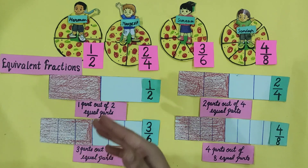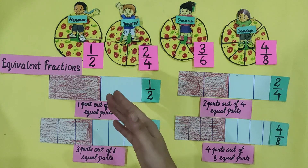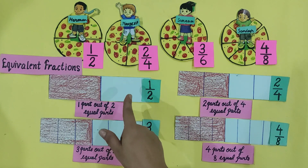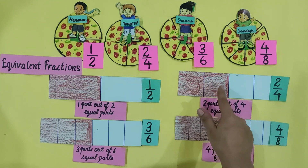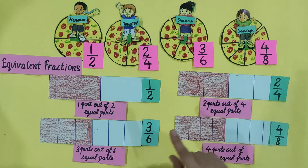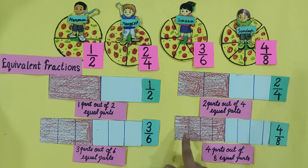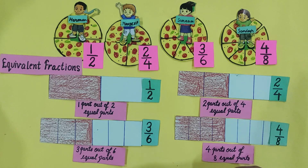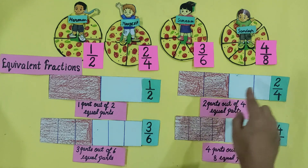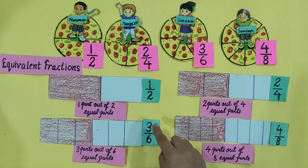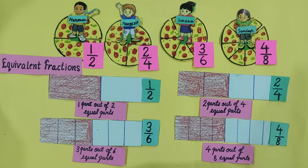Students, now in your homework, take 4 shapes. Divide the first shape into 2 equal parts, the second into 4 equal parts, the third into 6 equal parts, and the fourth into 8 equal parts. And colour these shapes 1 by 2, 2 by 4, 3 by 6, 4 by 8. Thank you.